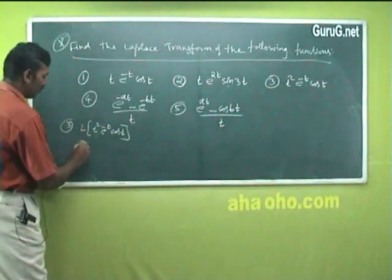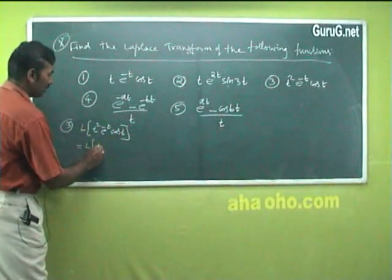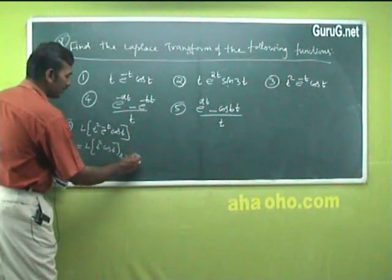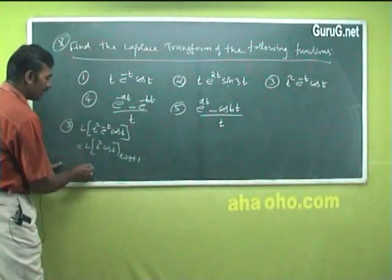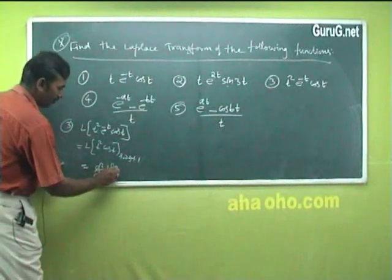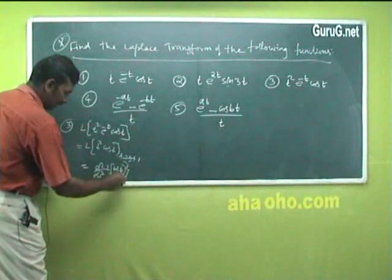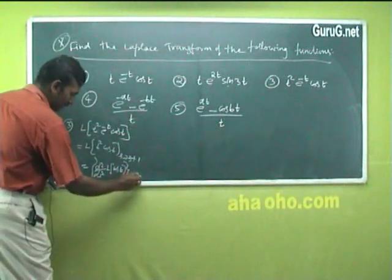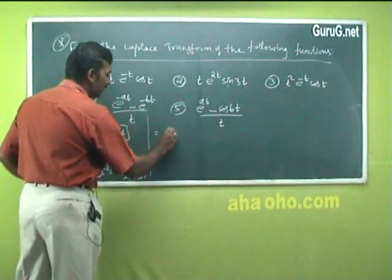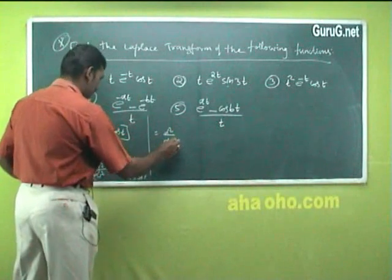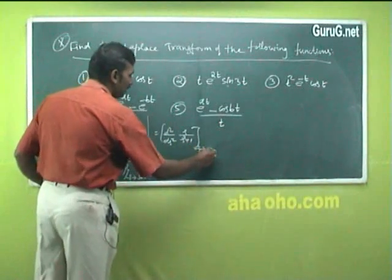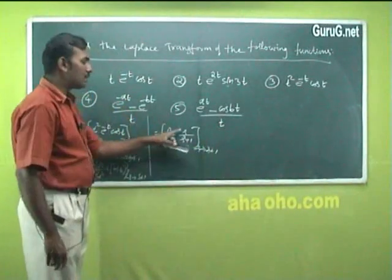Whenever we have e^(-t) in the Laplace transform, remove the exponential and find L{t²·cos t} with s replaced by s+1. For t², we use d²/ds² of L{cos t}, then replace s by s+1. L{cos t} = s/(s² + 1), and we need to differentiate this twice.